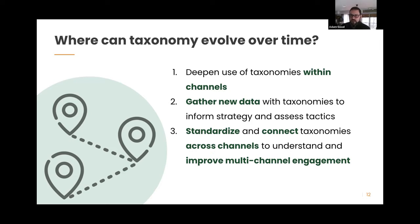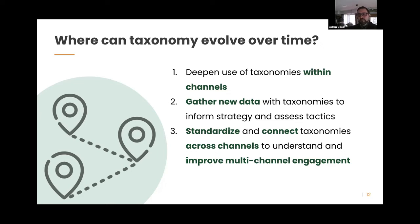A second way your taxonomy can evolve is gathering new data to inform your strategy and assess tactics. You want to be able to ask things like: what topics do people care about on our list? What content on the website is most engaging for particular audiences? Are people coming to a page but not taking the next step — email signup, donation, advocacy action? Maybe the presentation isn't as strong as it could be. Gathering data is a key way to use and evolve your taxonomy.